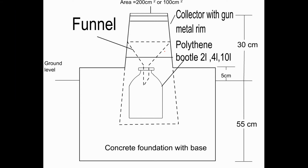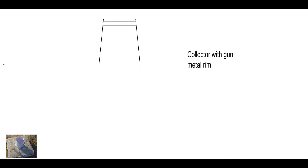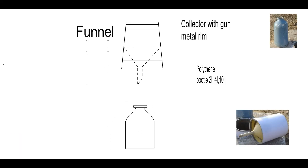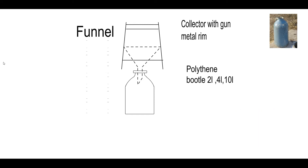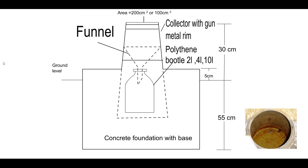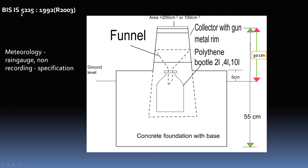Let's study the parts of a non-recording rain gauge. It consists of a collector and a funnel with a polythene bottle. The polythene bottle can be 2 litre, 4 litre, or 10 litre. There is a concrete foundation base and the dimensions are as shown here. These dimensions are as per IS 5225-1992, reaffirmed in 2003.